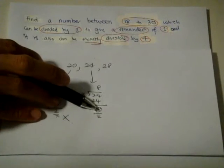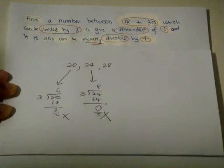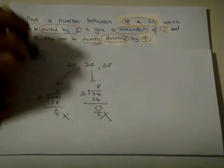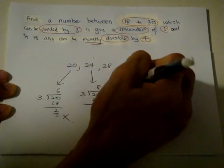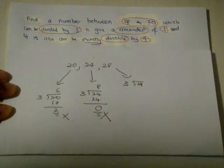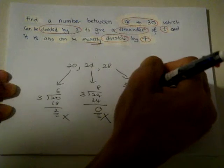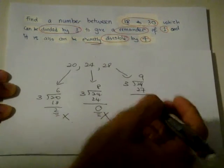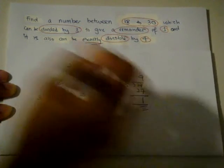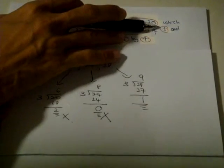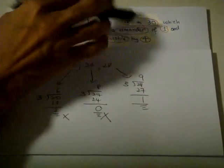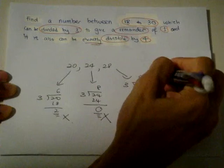28 divided by 3: 9 times 3 is 27, remainder 1. Check - exactly the same. Stop. So this is the answer, 28.